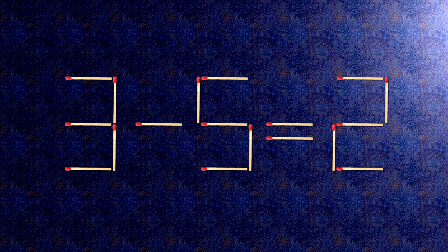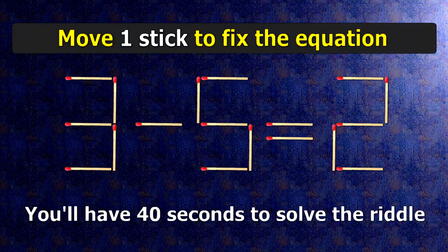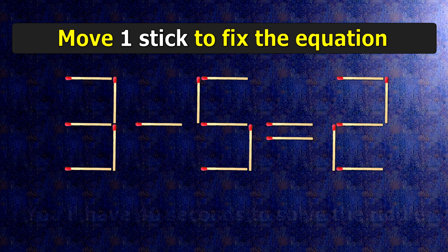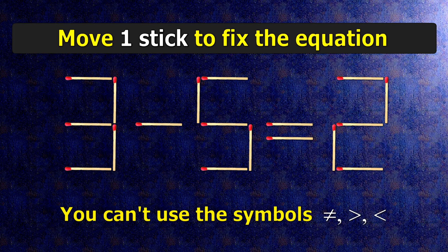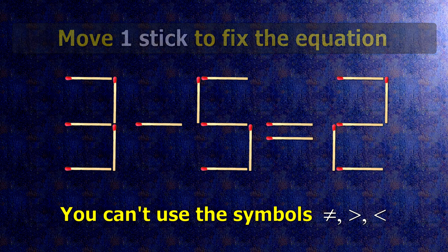We have the equality 3 minus 5 equals 2. Our equality is wrong. We need to move one match to make our equality correct.